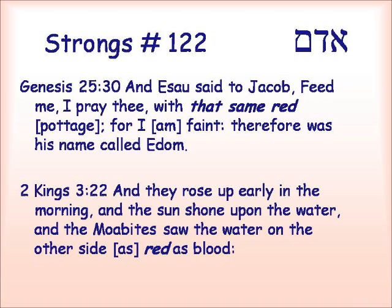Again, in Genesis 25.30: 'And Esau said to Jacob, Feed me, I pray thee, with that same red pottage, for I am faint. Therefore his name was called Adom.' There is not even a word there for pottage — it's just 'that red, red stuff' that Esau wants. In 2 Kings 3.22: 'And they rose up early in the morning, and the sun shone upon the water. And the Moabites saw the water on the other side as red as blood.' And we'll see about the blood in a minute.